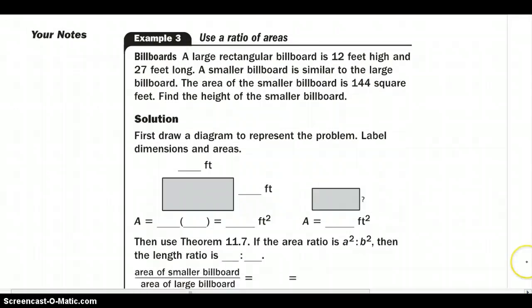Moving on to example 3, we have two large billboards that are rectangular. The larger one is 12 feet high and 27 feet long. So let's go ahead and plug that in - 12 feet high and 27 feet long. The smaller billboard is similar to the larger billboard. The area of the smaller billboard is 144 square feet. Find the height of the smaller billboard. So we want to find our height.